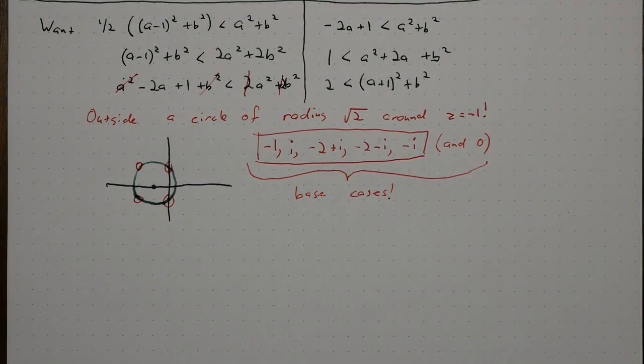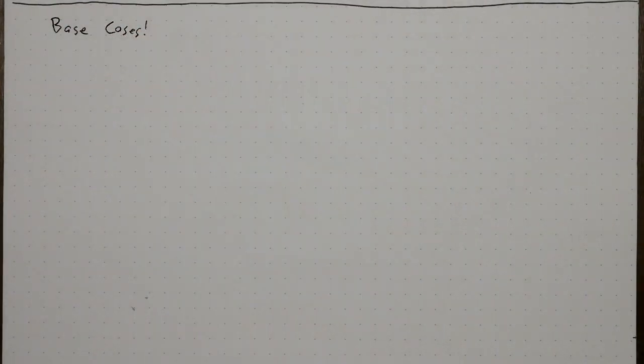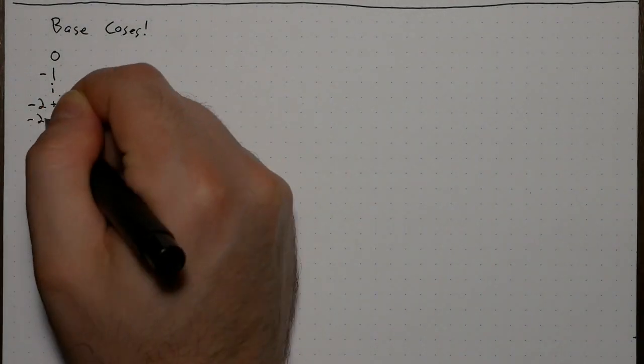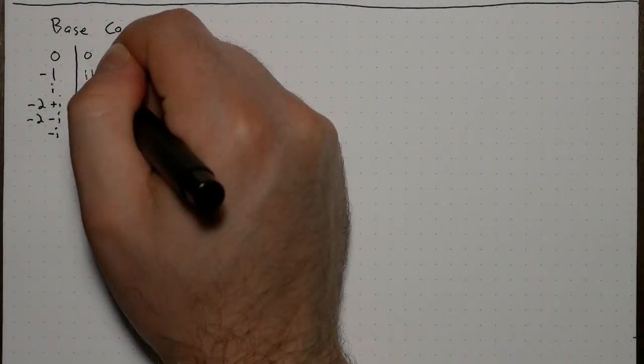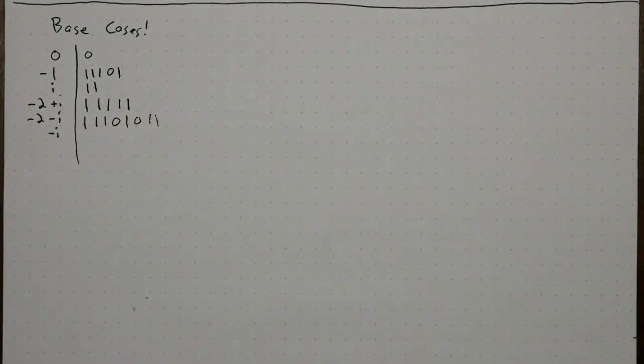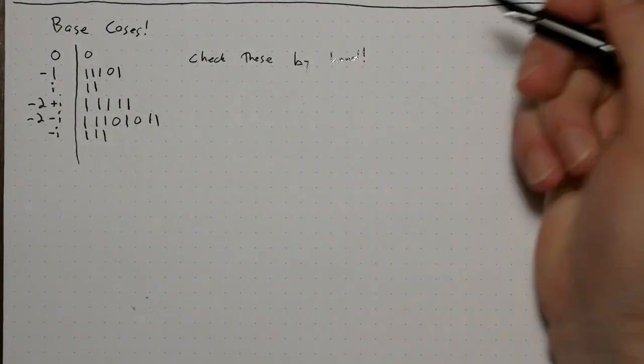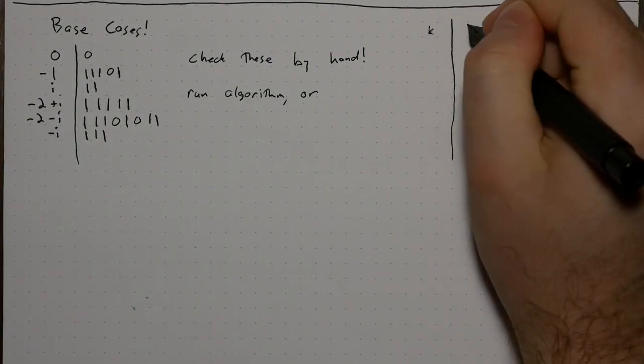They take a while to compute, especially minus 2 minus i, so here they are. You can check them by hand if you like. Either run the algorithm, or use this handy table of powers to check that they add up correctly.